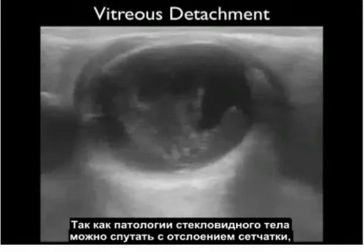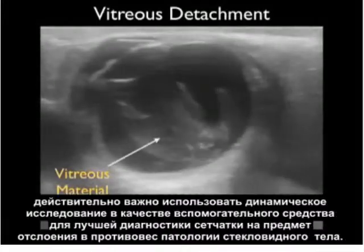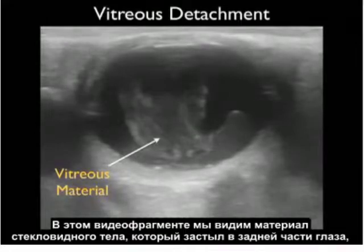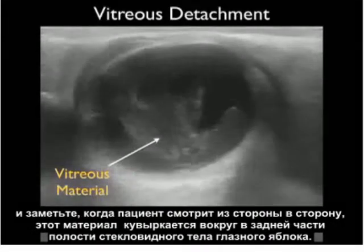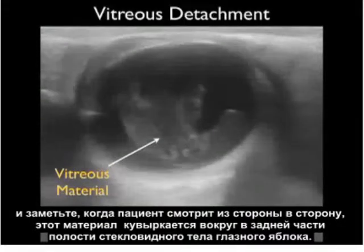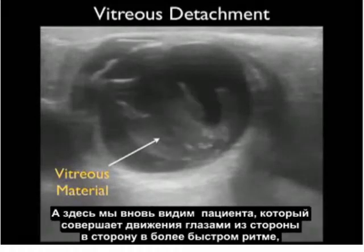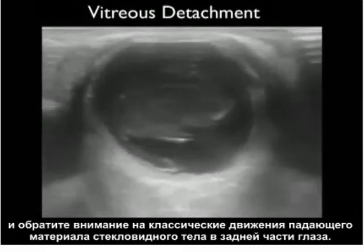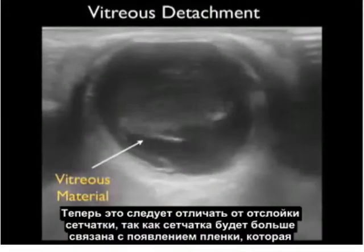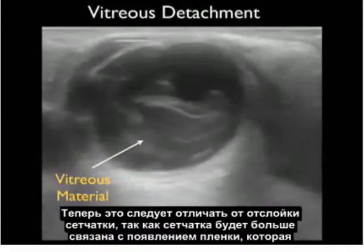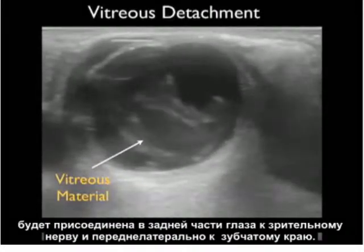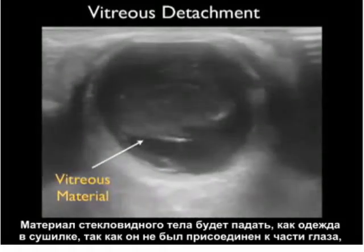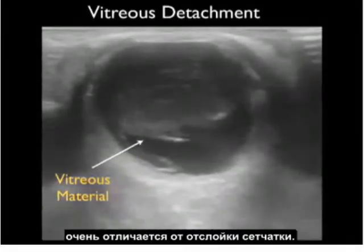Because vitreous pathology can be confused with retinal detachment, it's crucial to employ the kinetic examination to best differentiate retinal detachment from vitreous pathology. In this clip we see vitreous material congealed within the back of the eye. Notice as the patient looks from side to side, it tumbles around within the posterior vitreous cavity. This tumbling motion — like clothes in a dryer — is to be differentiated from a retinal detachment, which will have more of a tethered membrane appearance as it's attached at the optic nerve and anterior-laterally at the ora serrata.